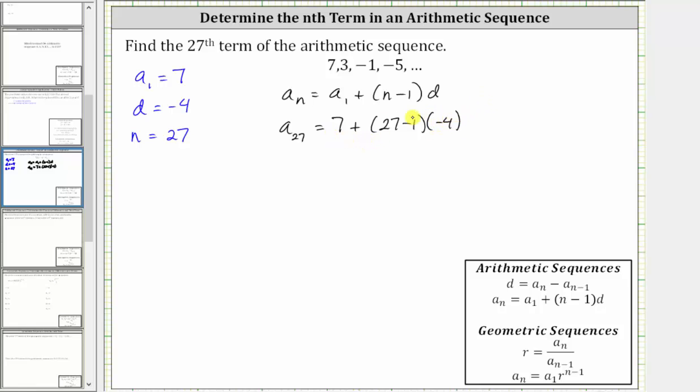Now we simplify using the order of operations. Simplifying inside the parentheses first, 27 minus one is 26. A sub 27 equals seven plus 26 times negative four. Next we multiply before adding: 26 times negative four is negative 104, giving us a sub 27 equals seven plus negative 104. Seven plus negative 104, which is also equal to seven minus 104, is equal to negative 97.